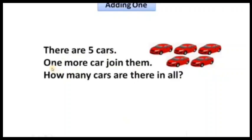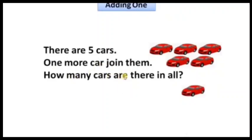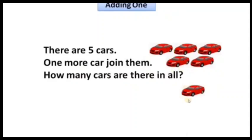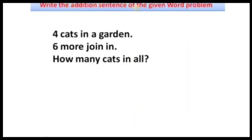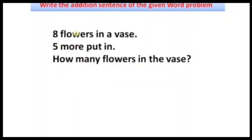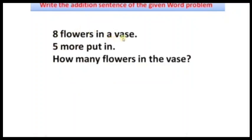There are five cars. One more car joins them. How many cars in all? Five cars and one more car joined: five plus one equals six. Next: four cats in a garden — six more join. How many cats in all? Four cats are there, six cats came and joined: four plus six equals ten cats.